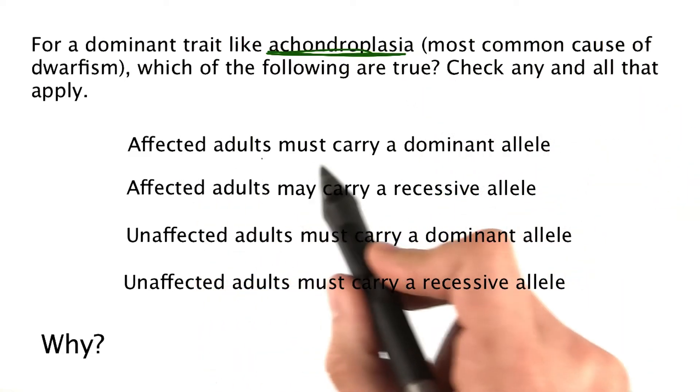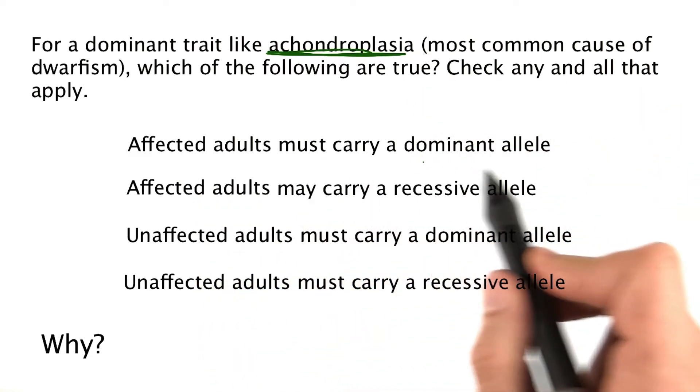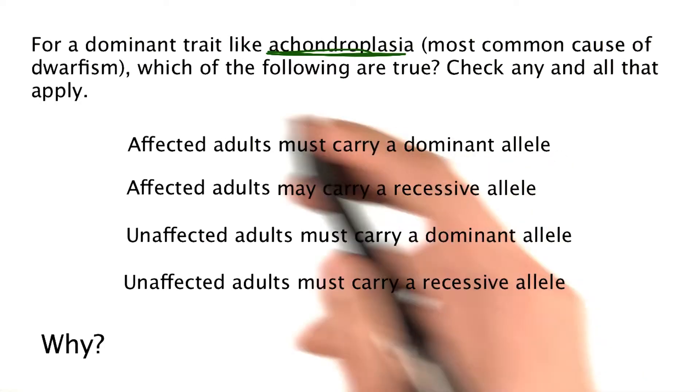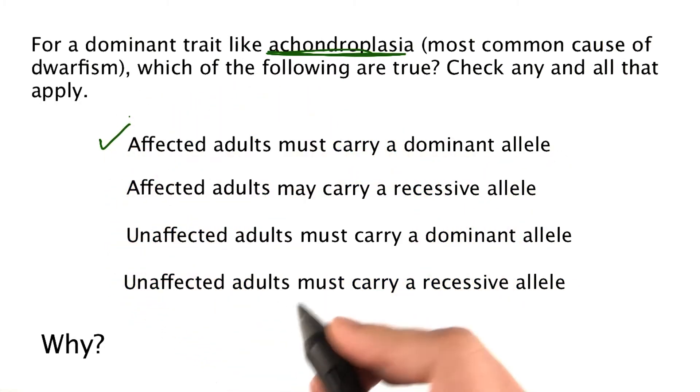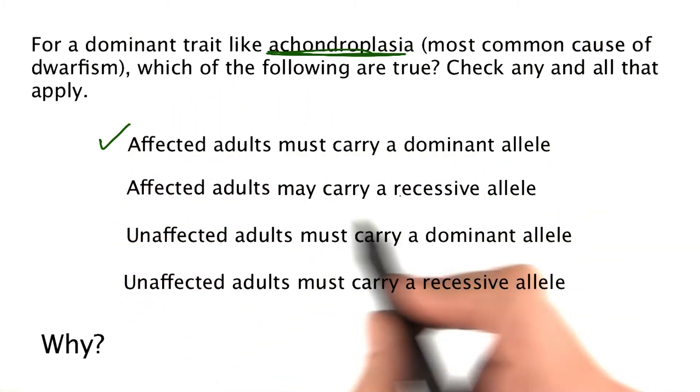Affected adults must carry a dominant allele. Well, that's true. If you're affected, you must have at least one of these dominant alleles.